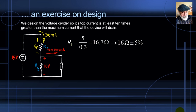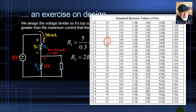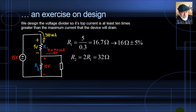For the bottom resistor, the voltage is 10 V — twice the top — so it should be approximately twice 16 ohms = 32 ohms. Checking the standard table, 32 is not available; we choose 33 ohms as the closest, ±5%. We now have a design.